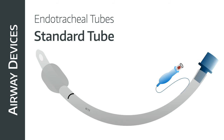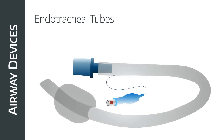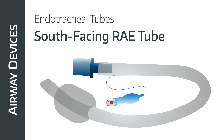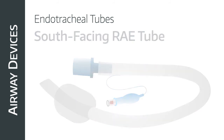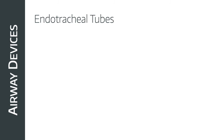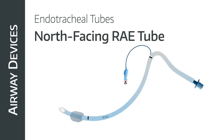The south-facing Ring-Adair-Elwyn (RAE) tube is really useful for orofacial surgery — the preformed bend means the external part of the tube can be taped to the patient's chin, and the breathing circuit hugs close to the patient's body out of the surgeon's way. The downside is that the depth of insertion is largely determined by its preformed bend. For nasal intubation, north-facing RAE tubes have a preformed bend so the tube can be taped to the forehead, keeping the breathing circuit connection out of the surgeon's way and facilitating oral and facial surgery by bypassing the oral cavity.